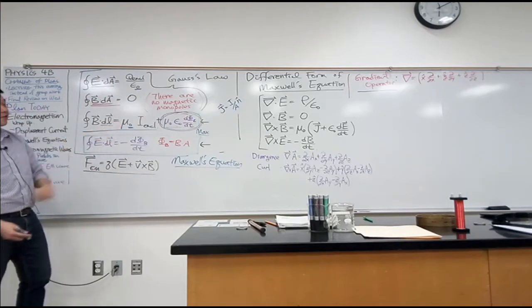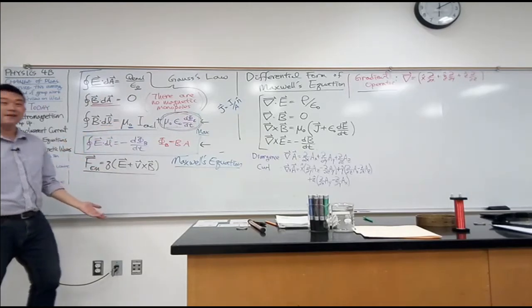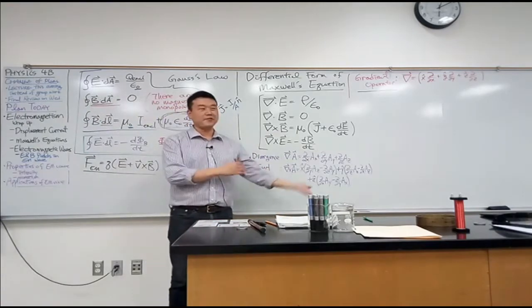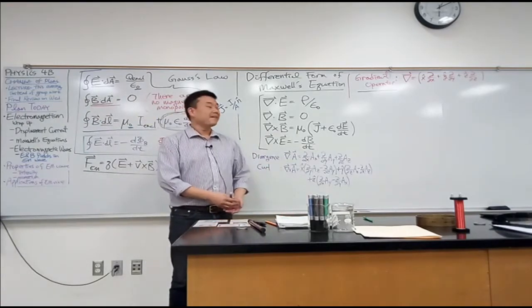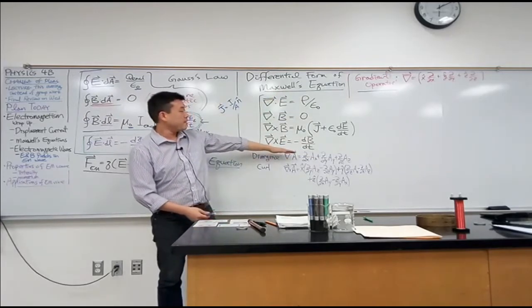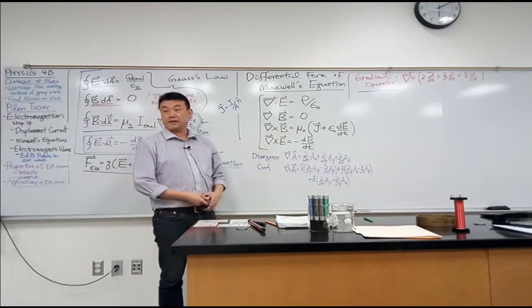Because we keep using this permittivity of free space and permeability of free space. So once you start talking about something in a linear medium, then you have to do more stuff. That's all precision material, I'm not gonna do that. But this equation describes everything we know about electricity and magnetism in vacuum.